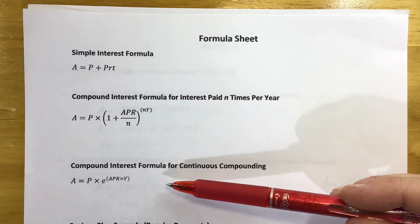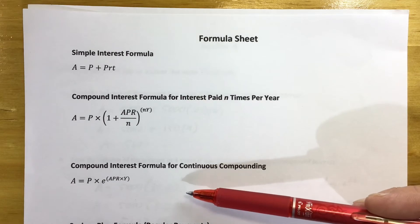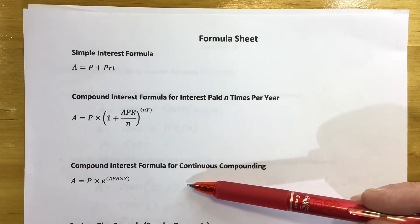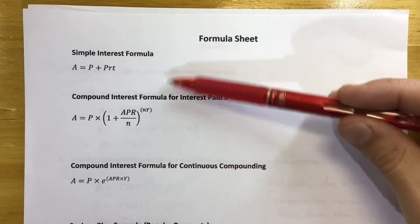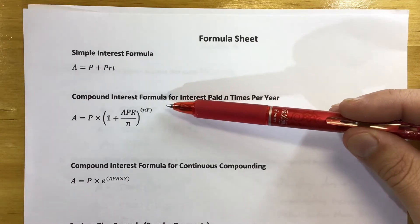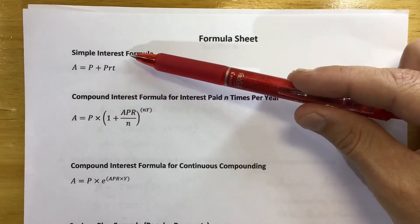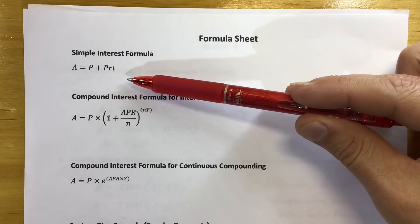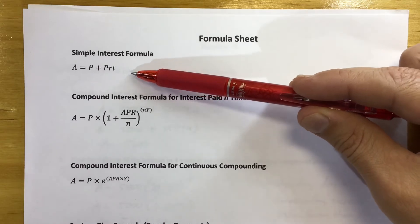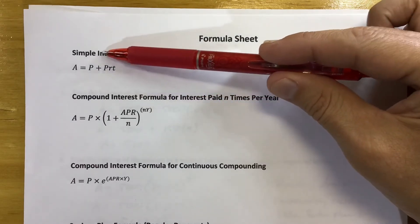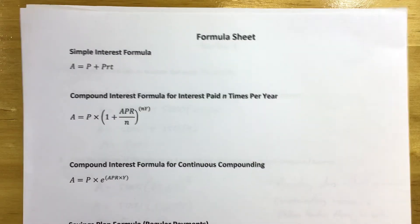We're not going to use the continuous compounding formula — it won't be on the test, so don't stress about it. It's really going to be the simple and compound formulas. How do you decide between them? It either has the word 'simple' or the word 'compound.' First identify that you're only depositing or paying back money one time, then look for whether it says simple or compound — that's what you'll be using.